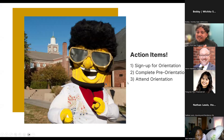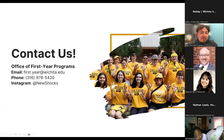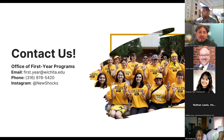Action items: if you have not signed up for orientation yet, please sign up at wichita.edu/orientation. From there, you'll get access to your pre-orientation modules — be sure to complete those prior to attending orientation. We'll send you reminders. And finally, attend your summer orientation program. If you have any questions or trouble accessing the orientation registration, contact us at firstyear@wichita.edu or by phone.